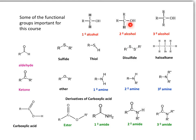We also find a secondary alcohol, which means that the carbon bearing the OH is bonded to a carbon that is bonded to two carbons. R represents any rest of the molecule — it could be a short hydrocarbon chain or a long one. We also find the tertiary alcohol, where the carbon that bears the OH is bonded to three carbons. These alcohols will have different chemical reactivity, producing different products in chemical reactions depending on what kind of alcohol we have.